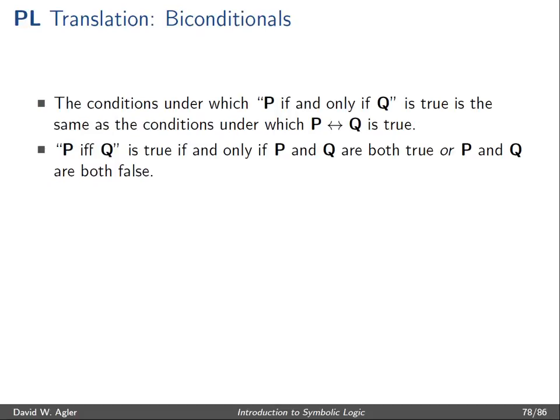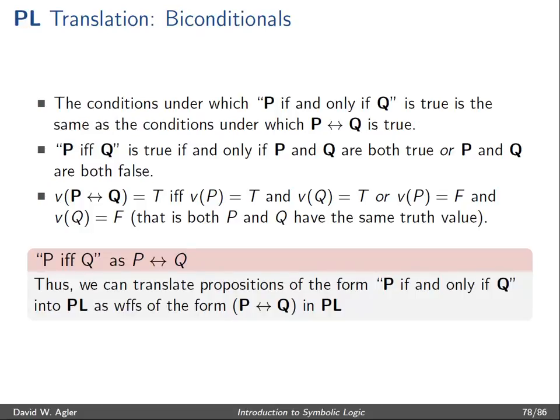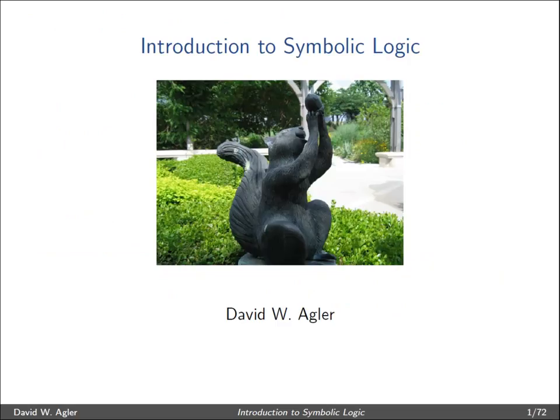Expressions of the form P if and only if Q are true provided P and Q have the same truth value — that is, P and Q are both true or P and Q are both false. The same is true for the biconditional in propositional logic: P double arrow Q is true provided P and Q are both true or both false. Thus, in conclusion, we can translate propositions of the form P if and only if Q into the language of propositional logic as well-formed formulas of the form P double arrow Q. This has been another video on the language of propositional logic — like the video if you found it helpful, and subscribe for more videos on topics in logic.